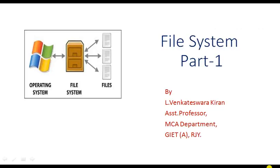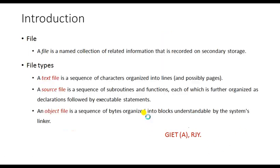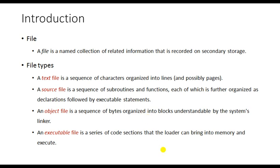In this session we are going to discuss about file systems. By definition, a file is a named collection of related information that is recorded on secondary storage. A file contains certain information that should be stored in secondary storage. Generally we read something on notepad and save it as a text file, or prepare a document in Word and save it as a document file. In general, a file is a collection of related information stored in secondary storage.